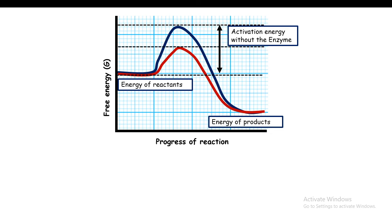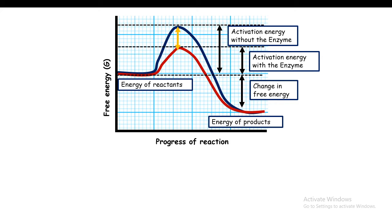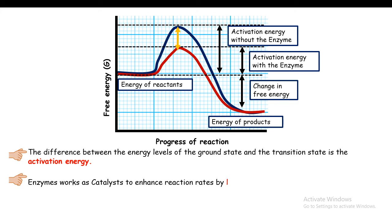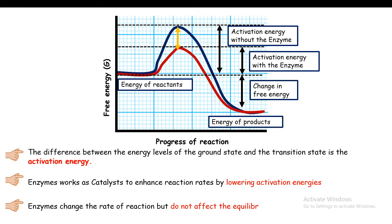The difference between the energy of the reactant and the transition state is the activation energy. Without an enzyme the activation energy is high, but if you have an enzyme that can catalyze the reaction, the activation energy is reduced. This reduction in activation energy is the key aspect of the enzyme-substrate reaction. Importantly, enzyme-substrate interaction decreases the activation energy and augments the reaction rate, but the enzyme does not change the equilibrium.